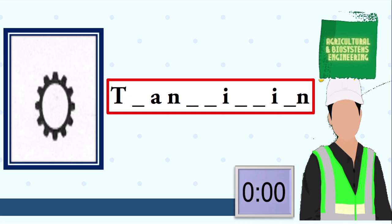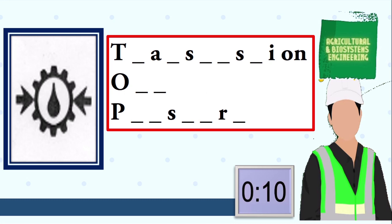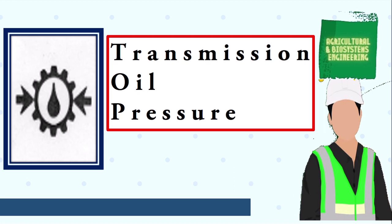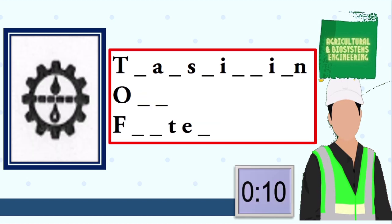The answer is transmission. Next symbol, your 10 seconds starts now. The answer is transmission oil pressure. Next symbol, your 10 seconds starts now. The answer is transmission oil temperature. Next symbol, your 10 seconds starts now.